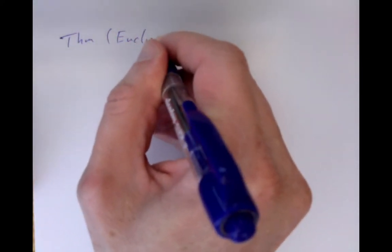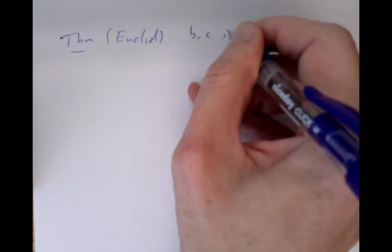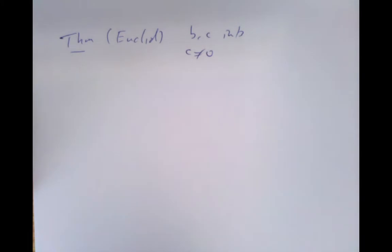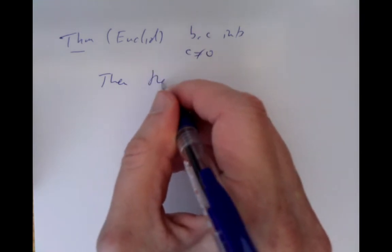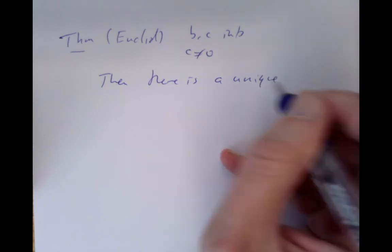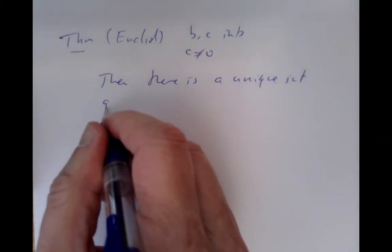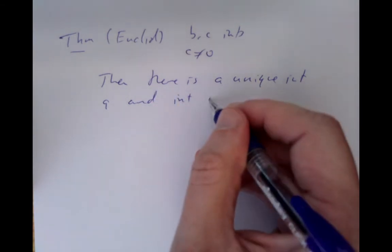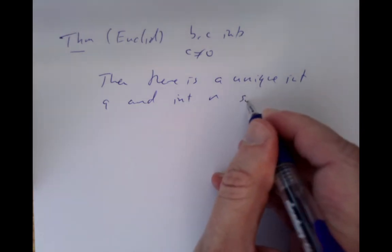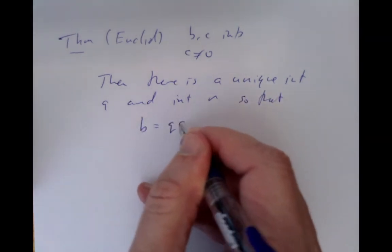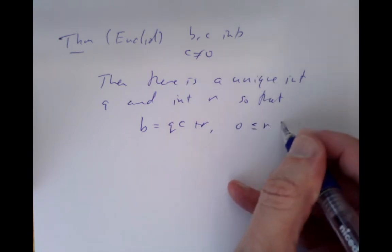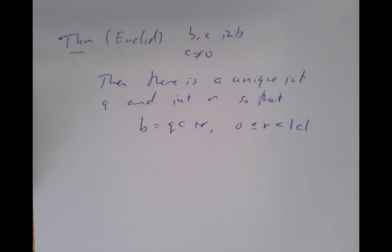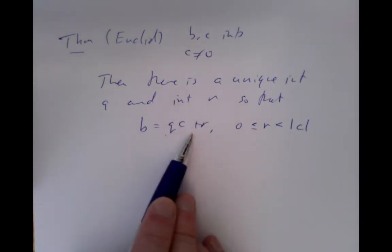We'll write down a theorem which is due to Euclid: if b and c are integers, and c is not zero, then there is a unique integer q and a unique integer r such that b equals q times c plus r, with the remainder r satisfying 0 ≤ r < |c|. So that's Euclid's theorem — it means we can always divide with a remainder.